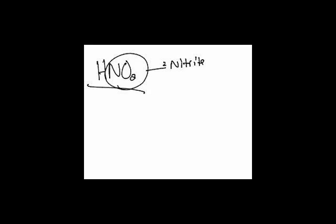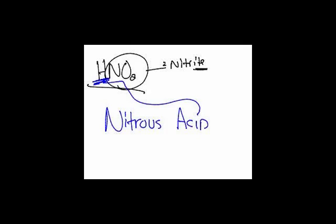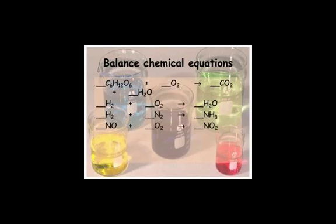A couple more we should do. HNO2. NO2 is the nitrite ion. Ite becomes ous. So instead of nitrite, we have nitrous. And we end it with acid because it has the H in front. Nitrous acid. That was quick. I think you guys are good at that.